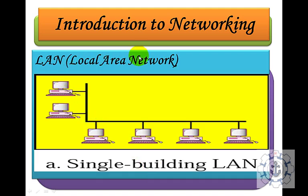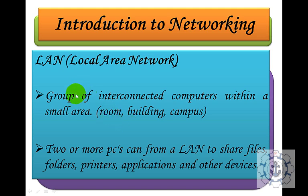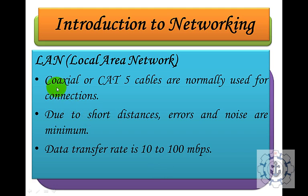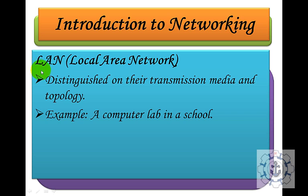A Local Area Network is a group of interconnected computers within a small area — a room, building, or campus. Two or more PCs can form a LAN to share files, folders, printers, applications, and other devices. Coaxial or Cat-5 cables are normally used for connections. Due to the shorter distance, error and noise are minimum, and the data transfer rate is 10 to 100 Mbps. An example is a computer lab in a school.